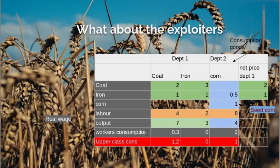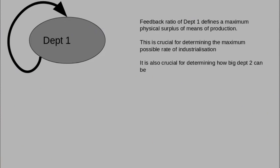This leaves over a surplus which the upper class consumes — in this case, 1.2 units of coal and one unit of corn. Another way of looking at this is as what in computer terminology is called a directed graph: a series of circles with arcs or lines going between them. Department 1 produces a lot of output that goes back into Department 1, and the amount that has to be fed back determines the scale of the physical surplus product that Department 1 can produce.